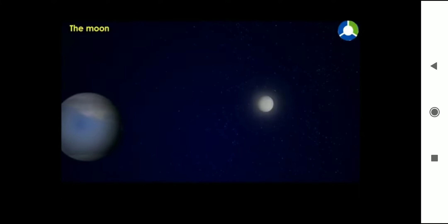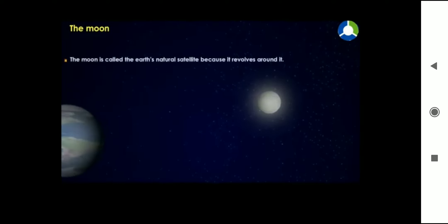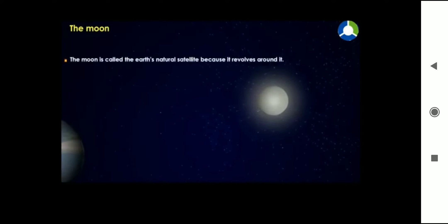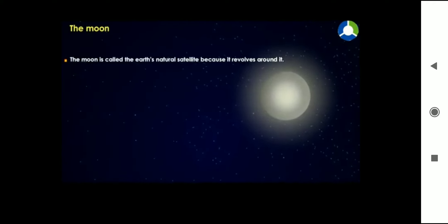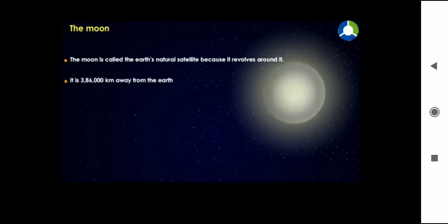The moon is called the Earth's natural satellite because it revolves around it. The moon is about 386,000 kilometers away from the Earth, and it is the second brightest heavenly body in the sky.